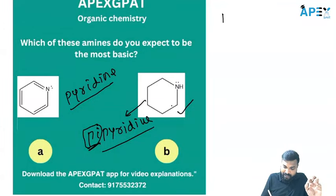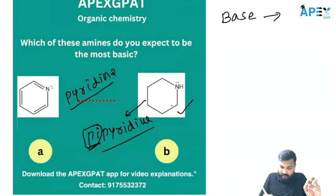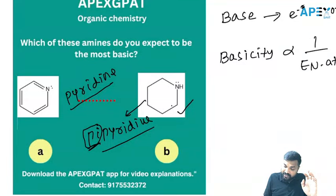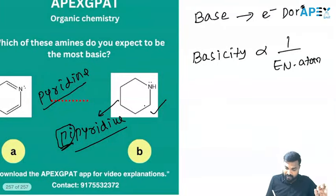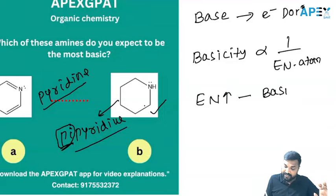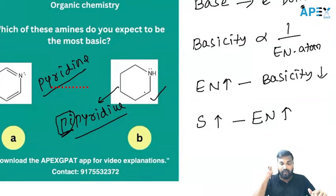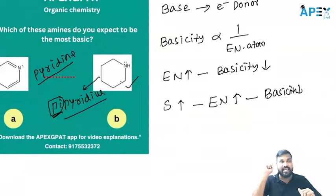To decide which is more basic, let's understand the basics. What does 'base' mean? It means electron donor. Now, basicity is inversely proportional to the electronegativity of the atom. If electronegativity increases, basicity decreases. If electronegativity is more, the electron-donating tendency is less.